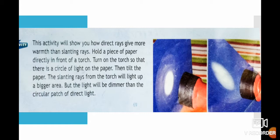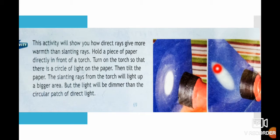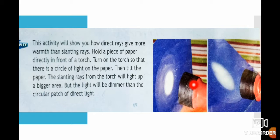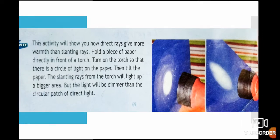This activity will show how direct rays give more warmth than slanting rays. Hold a piece of paper directly in front of a torch light. Turn on the torch so that there is a circle of light on the paper. Then tilt the paper — the slanting rays from the torch will light up a bigger area, but the light will be dimmer than the circular patch of direct light. When you are free, you can do this activity.